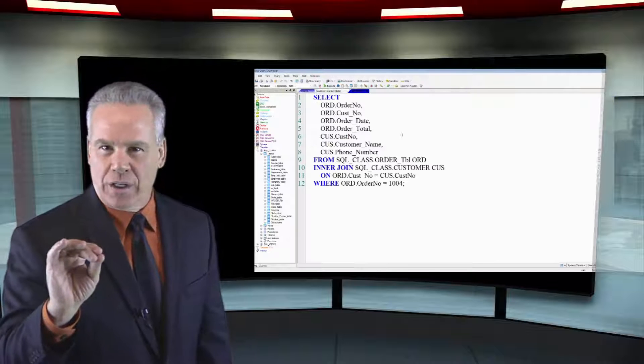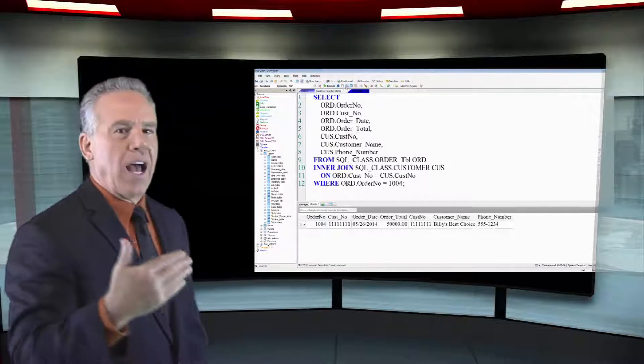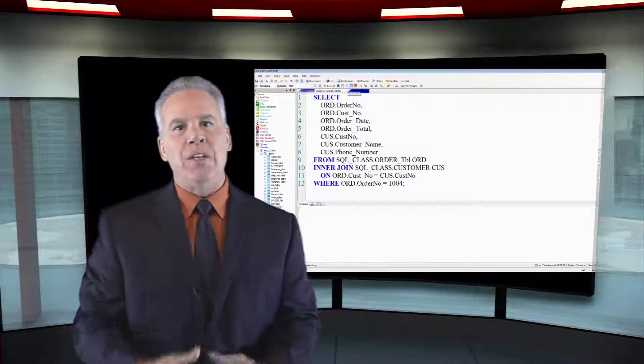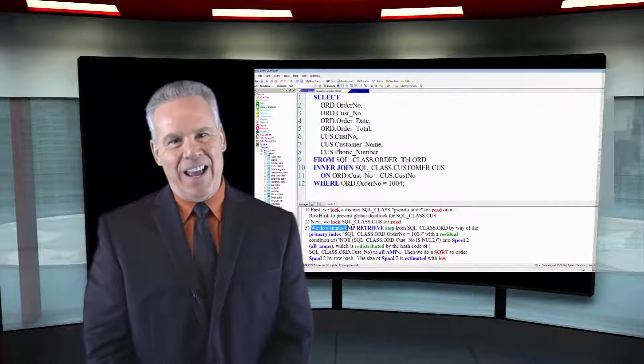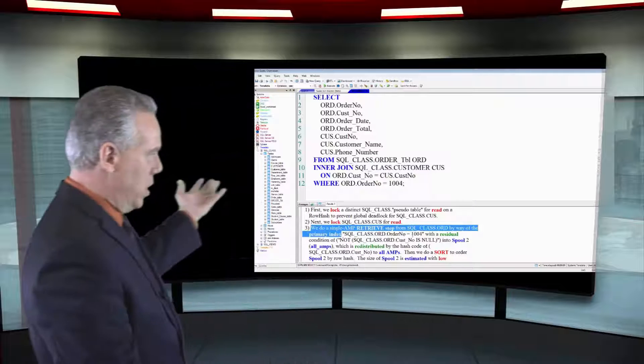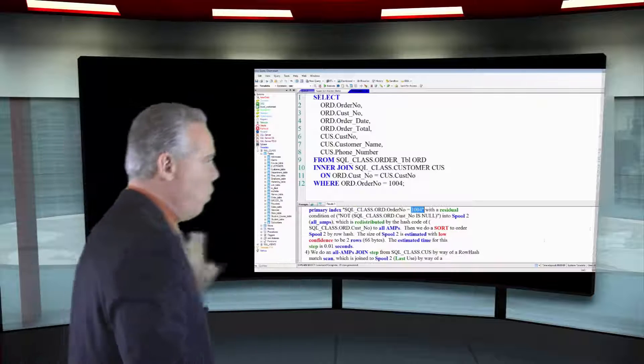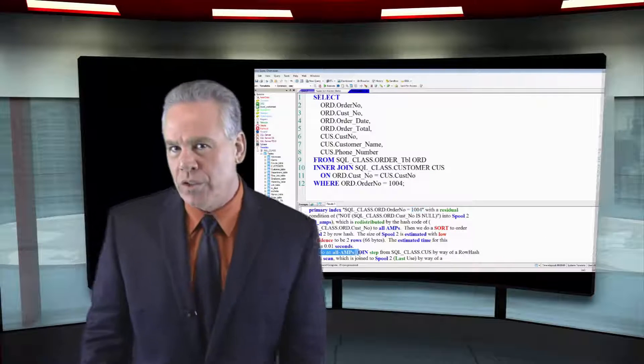Now let's take a little closer look at this. In some cases you're going to say I'm going to join using the ANSI syntax and I'm going to use the word inner join on customer number equals customer number. You'll have an additional where order number equals 1004.